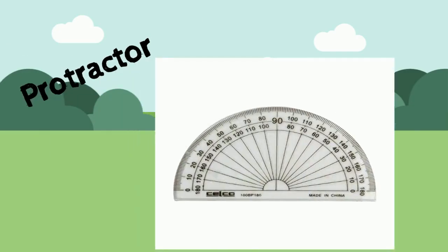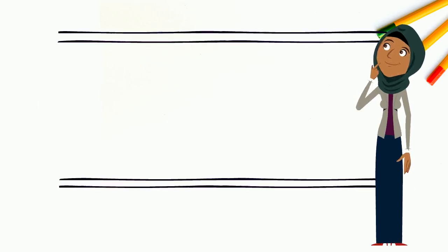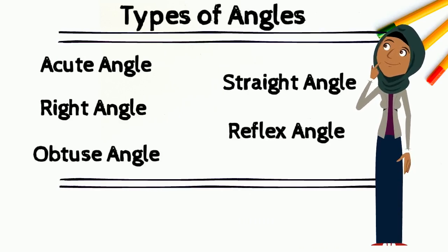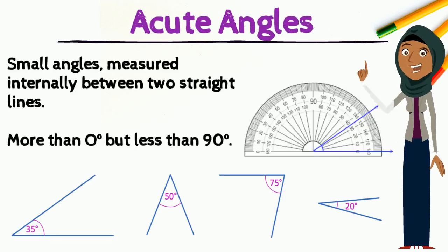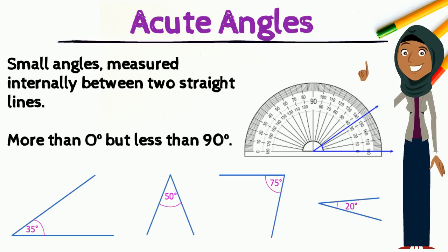We use a protractor to measure the size of an angle. There are different types of angles, and today we are learning about acute angles, right angles, obtuse angles, straight angles, and reflex angles. Acute angles are small angles. They are measured internally between the two straight lines and are more than zero degrees but less than 90 degrees.